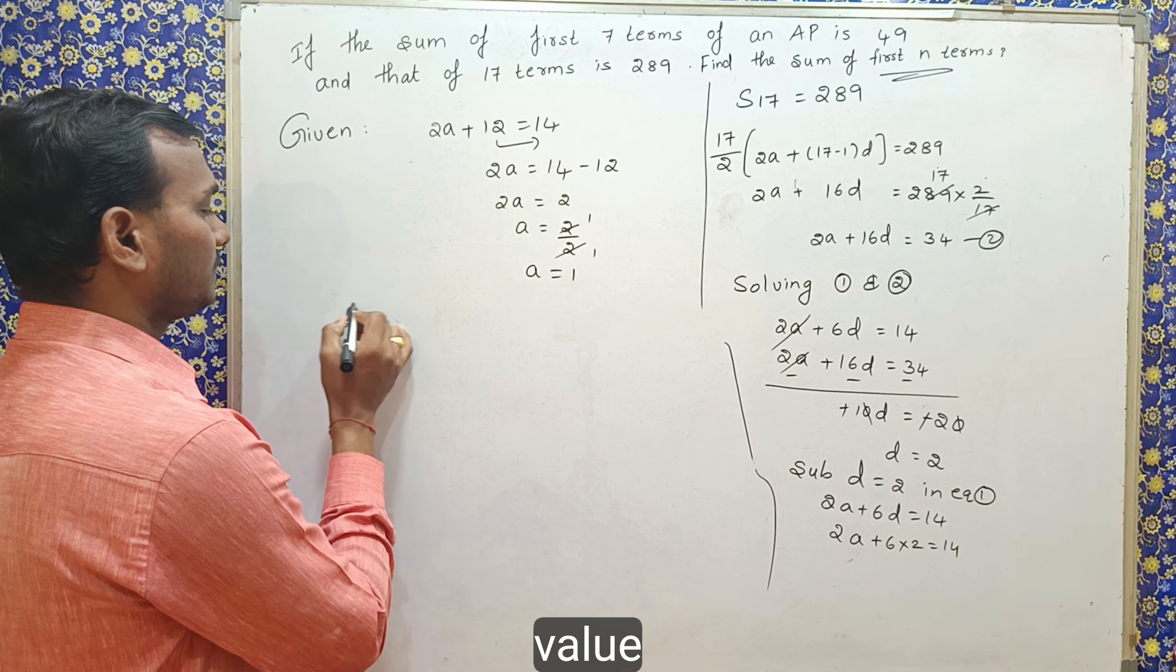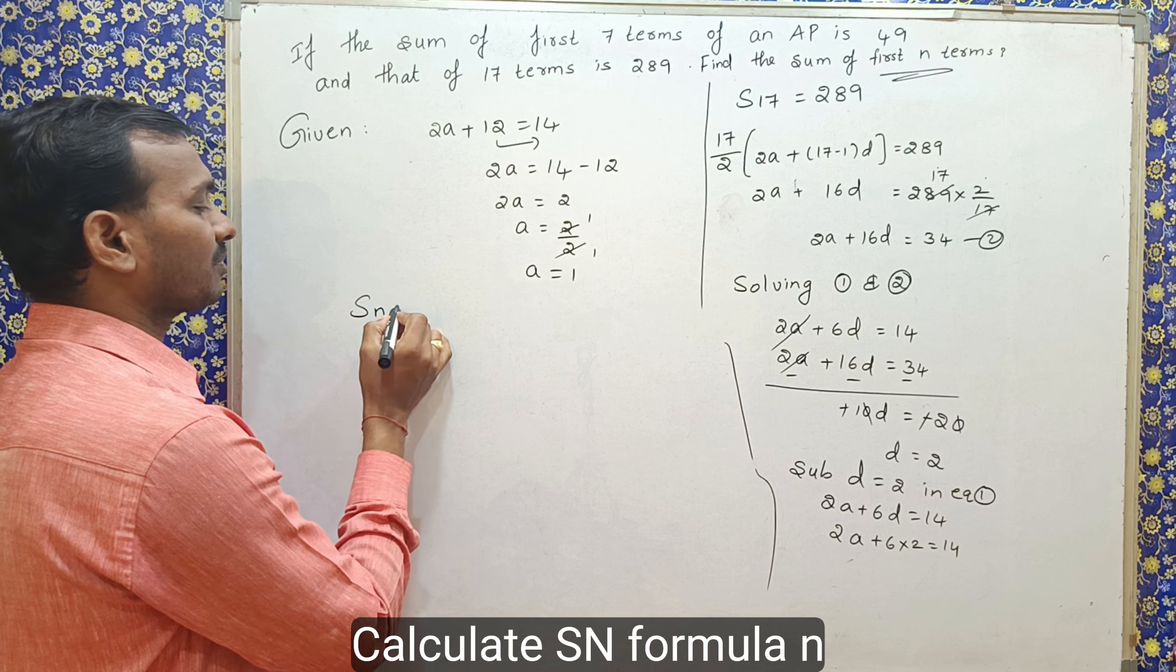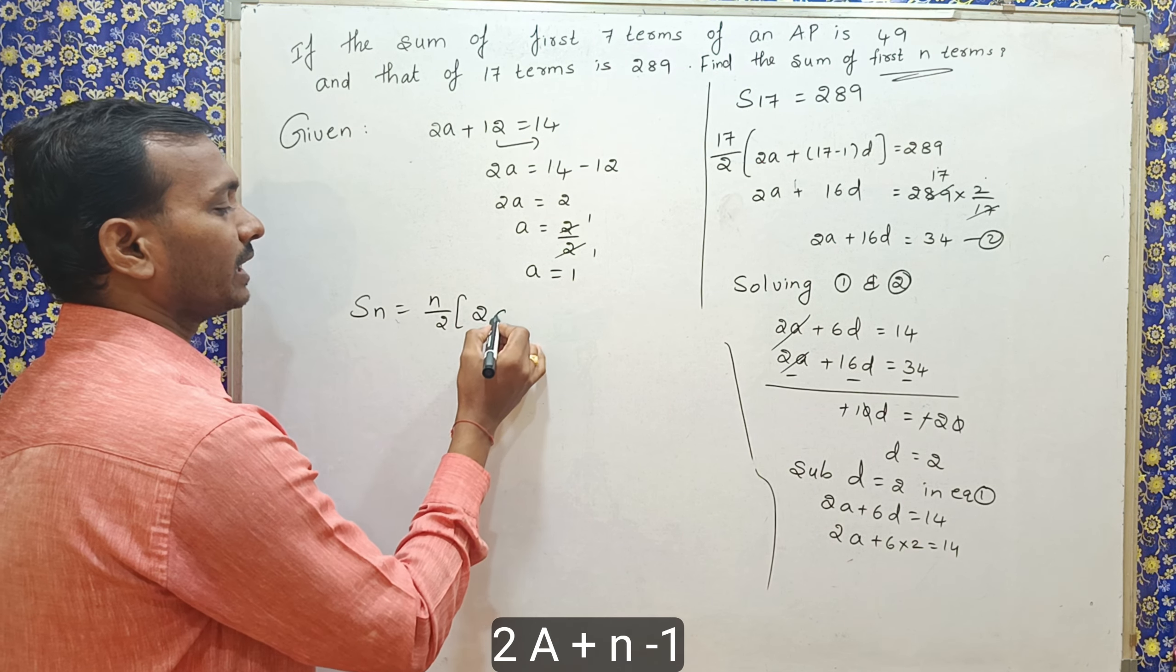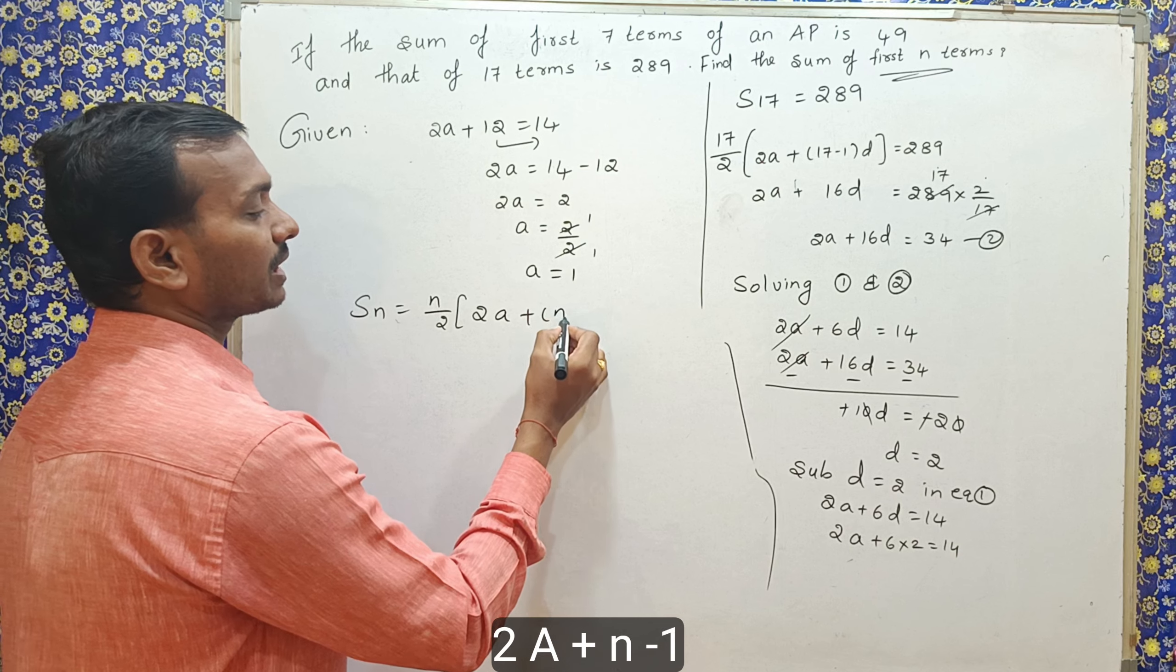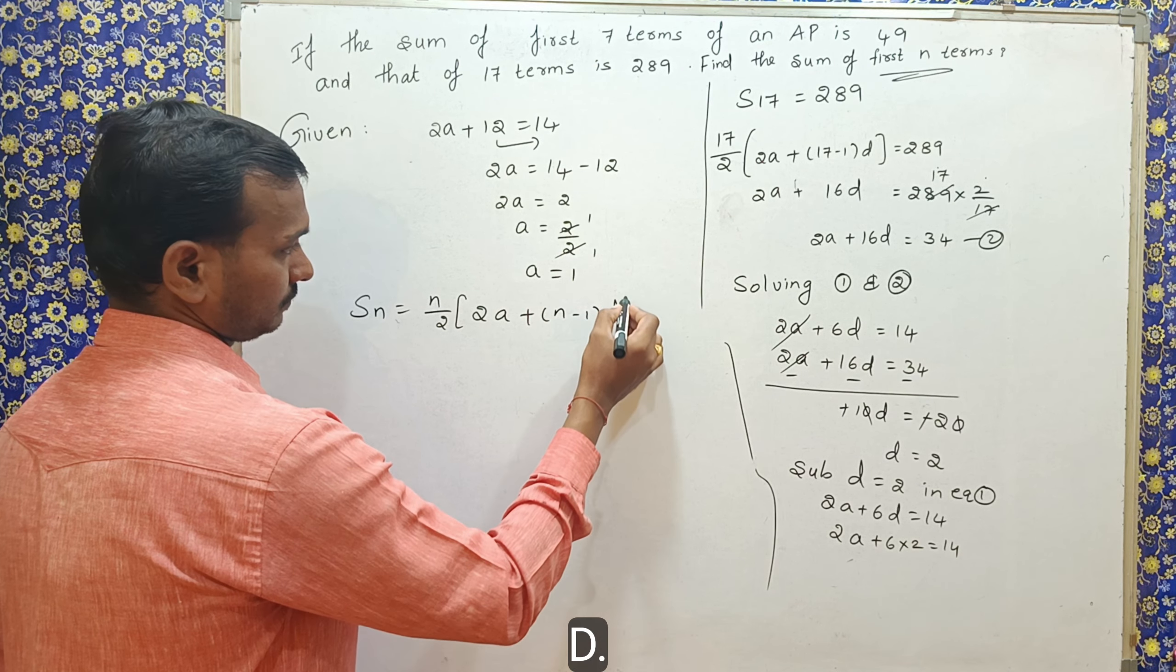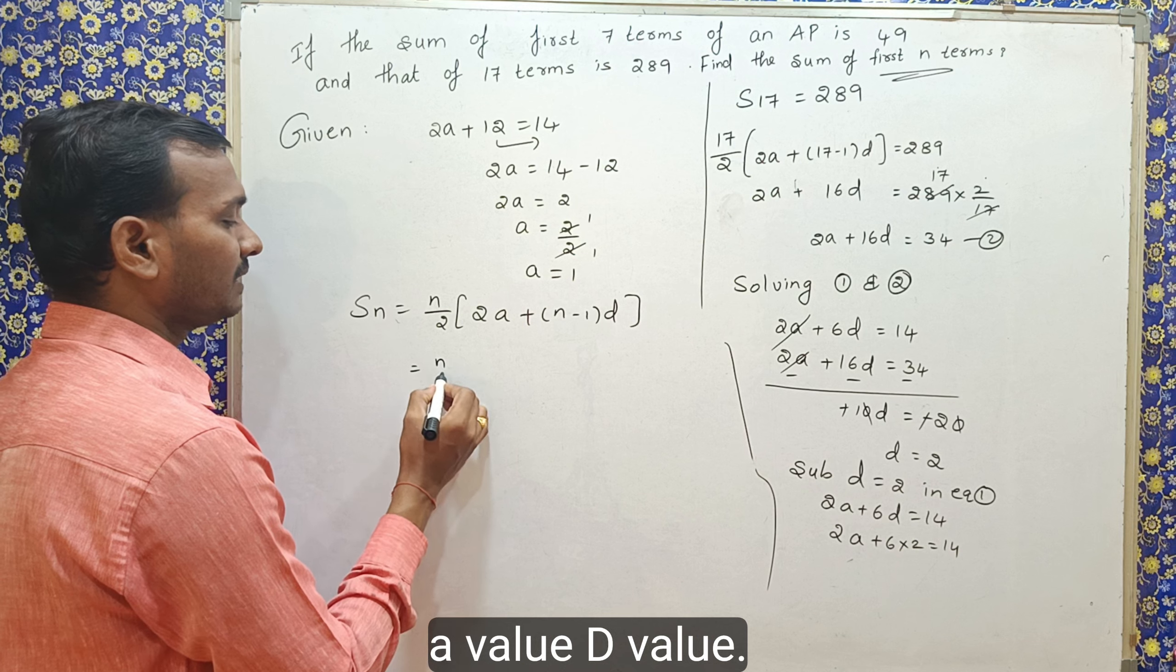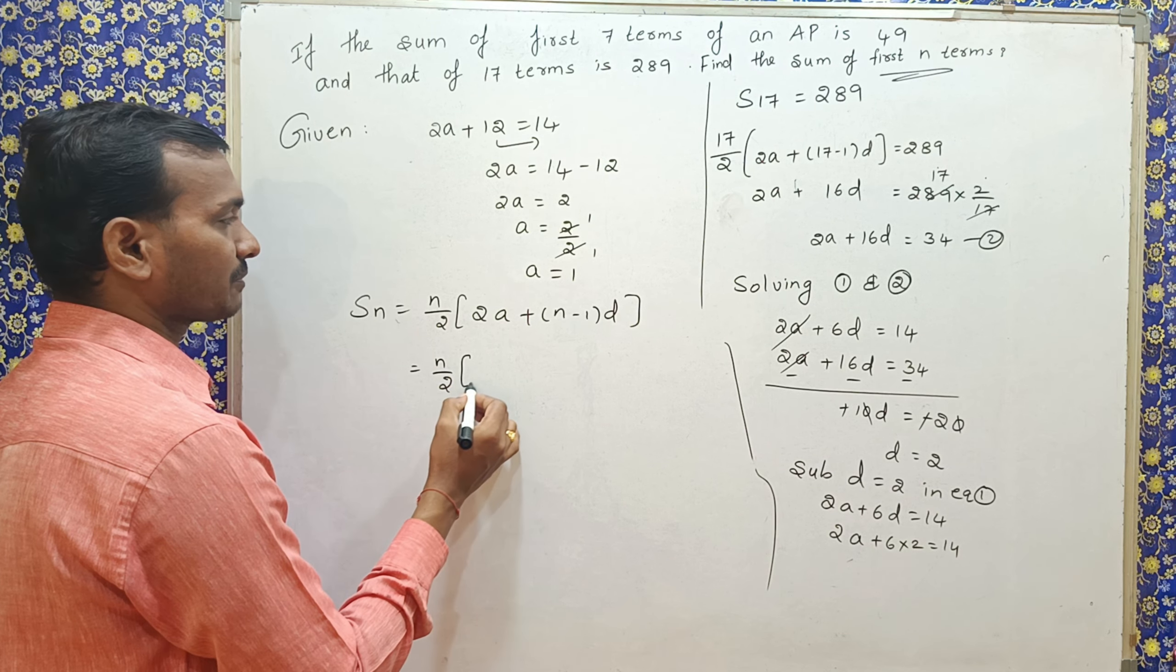We have to find Sn formula, n by 2, 2a plus n minus 1 into d. So, now, just substitute the a value and d value here.